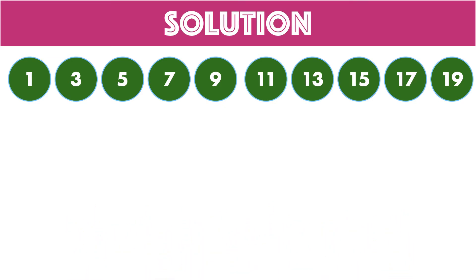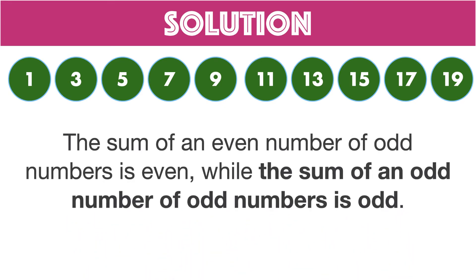Before proceeding, it is important to understand that it is impossible to get the value 50 using 5 numbers mentioned here, since the sum of any odd number of odd numbers is itself always odd. It would be impossible to pick 5 odd numbers from this list and get 50, which is an even number. All the numbers mentioned in the question are odd numbers, and the sum of 5 odd numbers will always be odd.